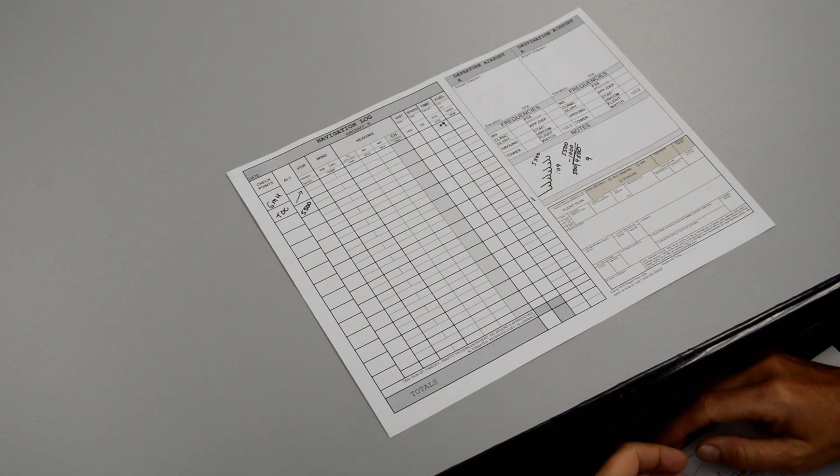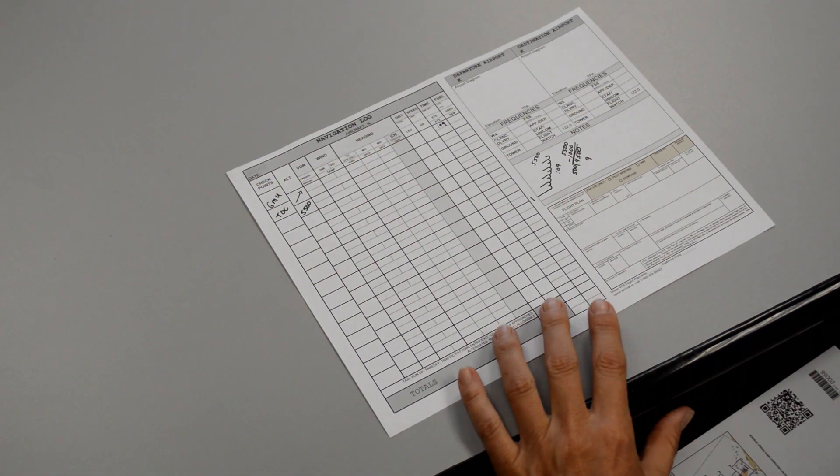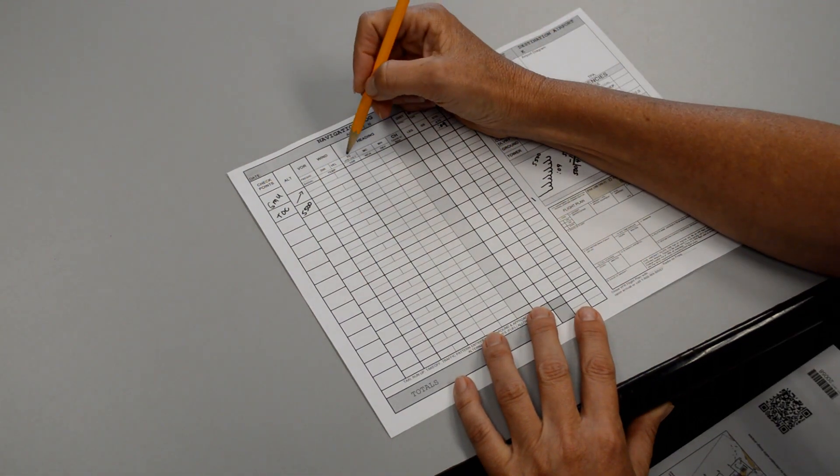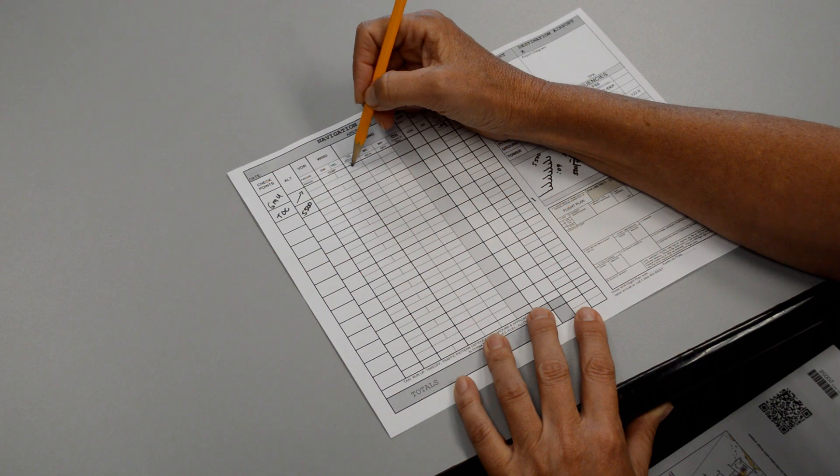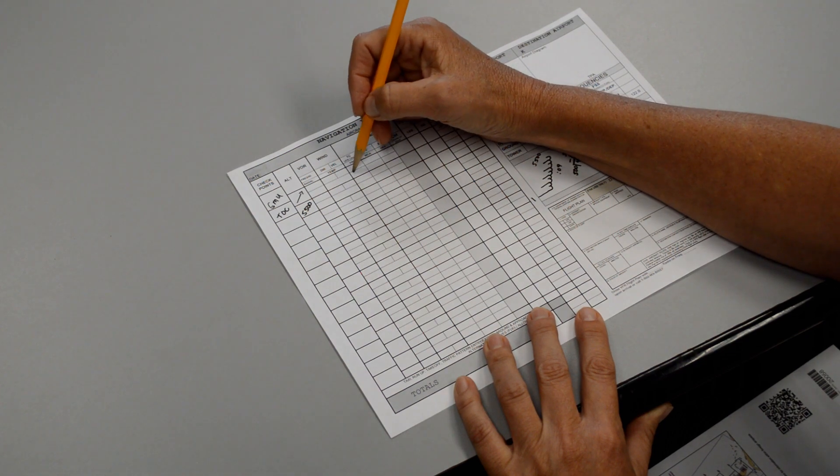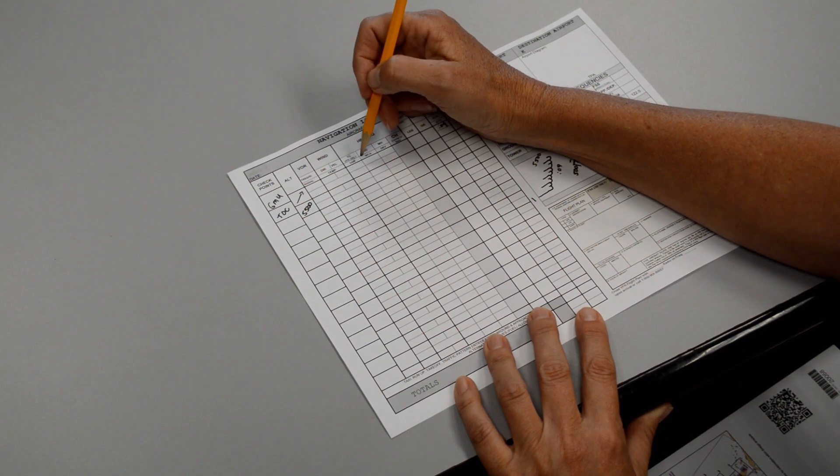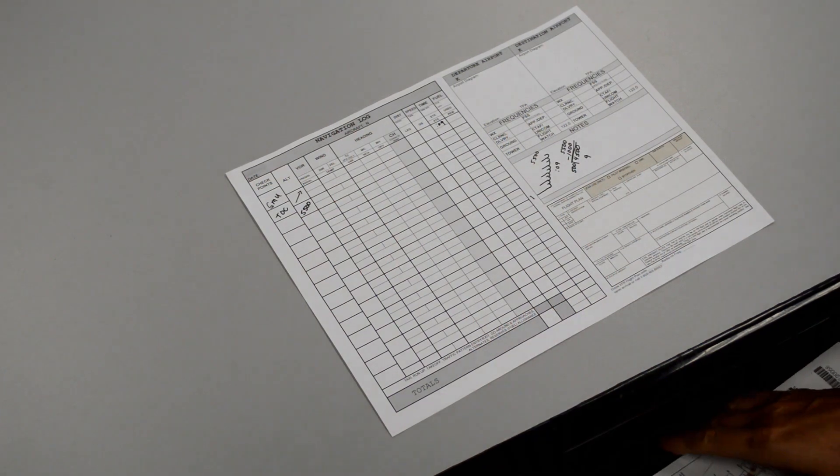Number 9 on our cross-country flight plan asks for us to find our true course and the variance. The true course, TC, is going to be placed in this box and the variance is going to be placed in this box. In order to find these, we need our sectional chart.